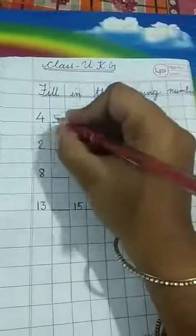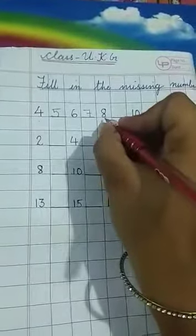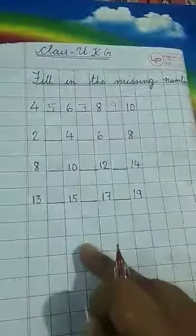After 6, what you will write? 6, 4, 5, 6, 7. These are the blanks which you will fill it up. After 8, 9. Then 10 is given. So this is fill in the missing numbers. So you will do rest of it.